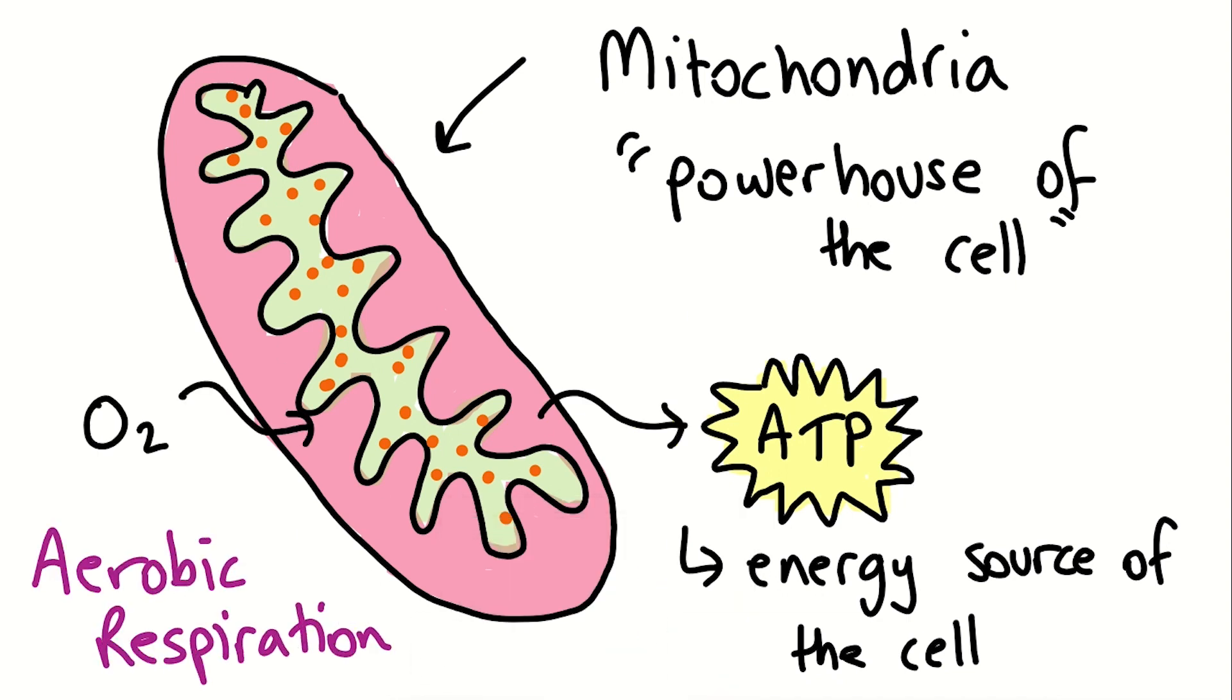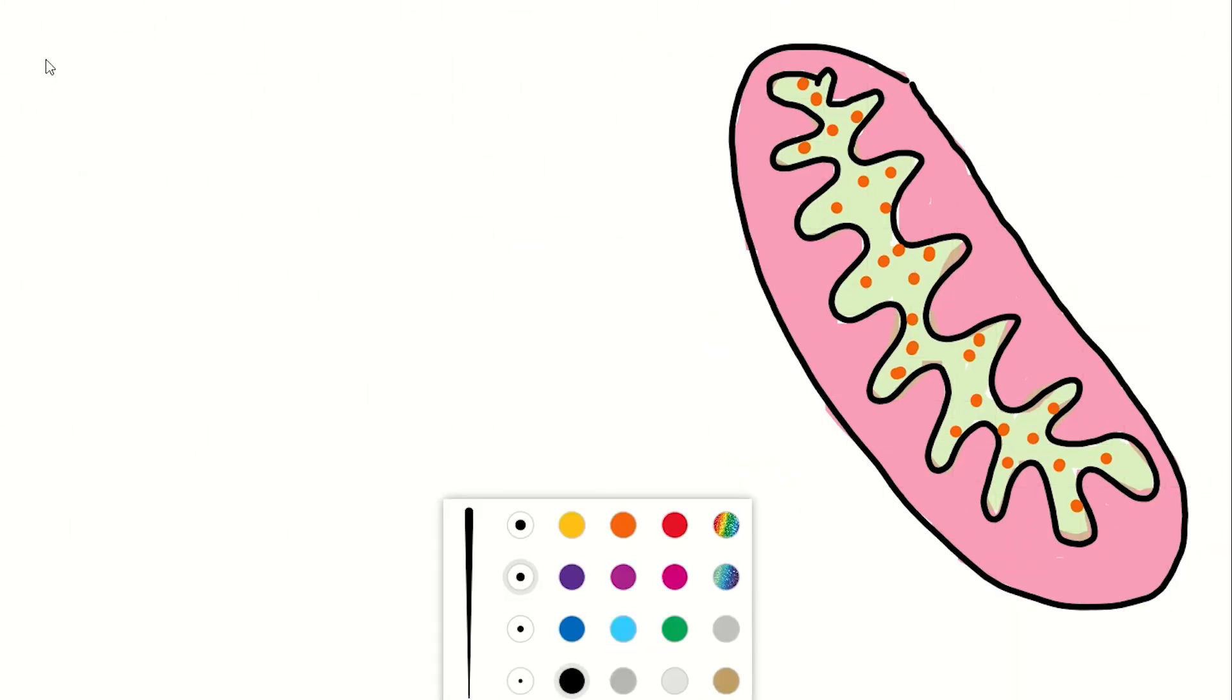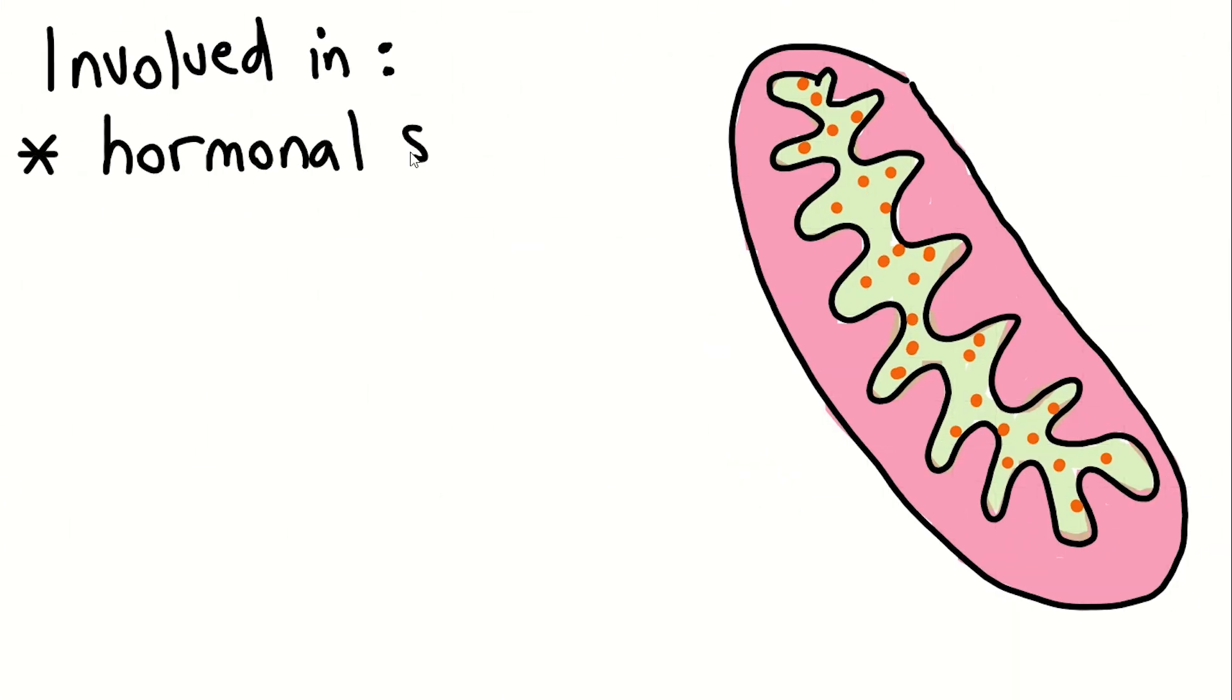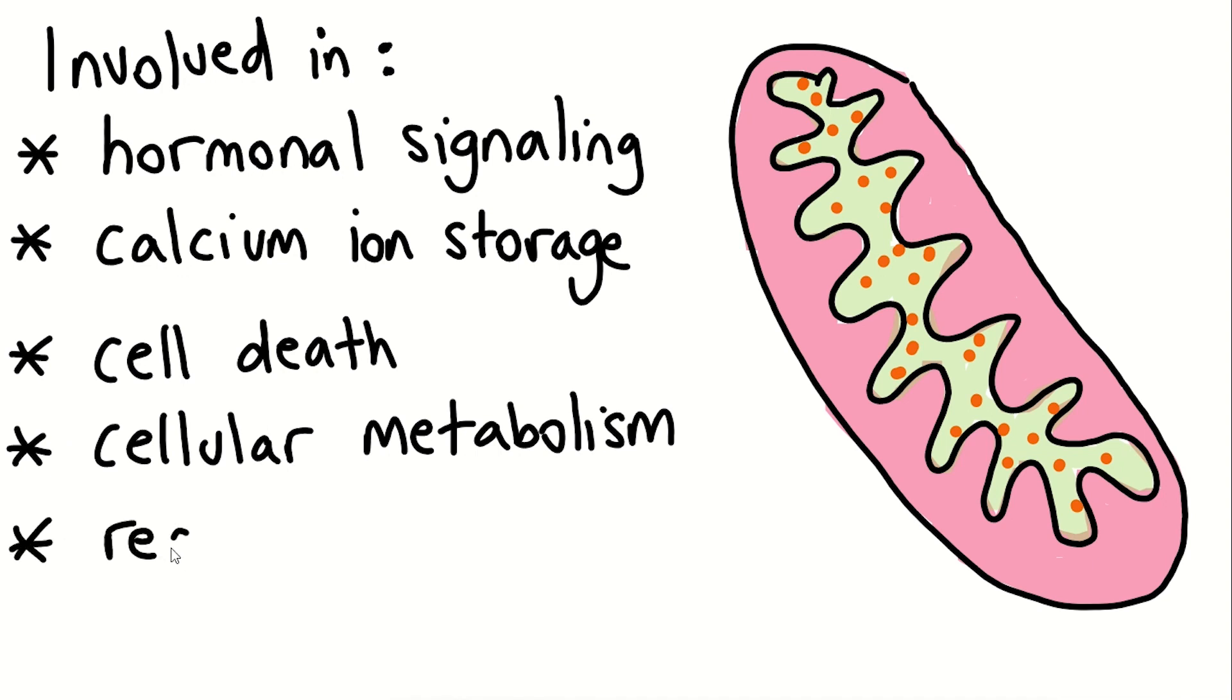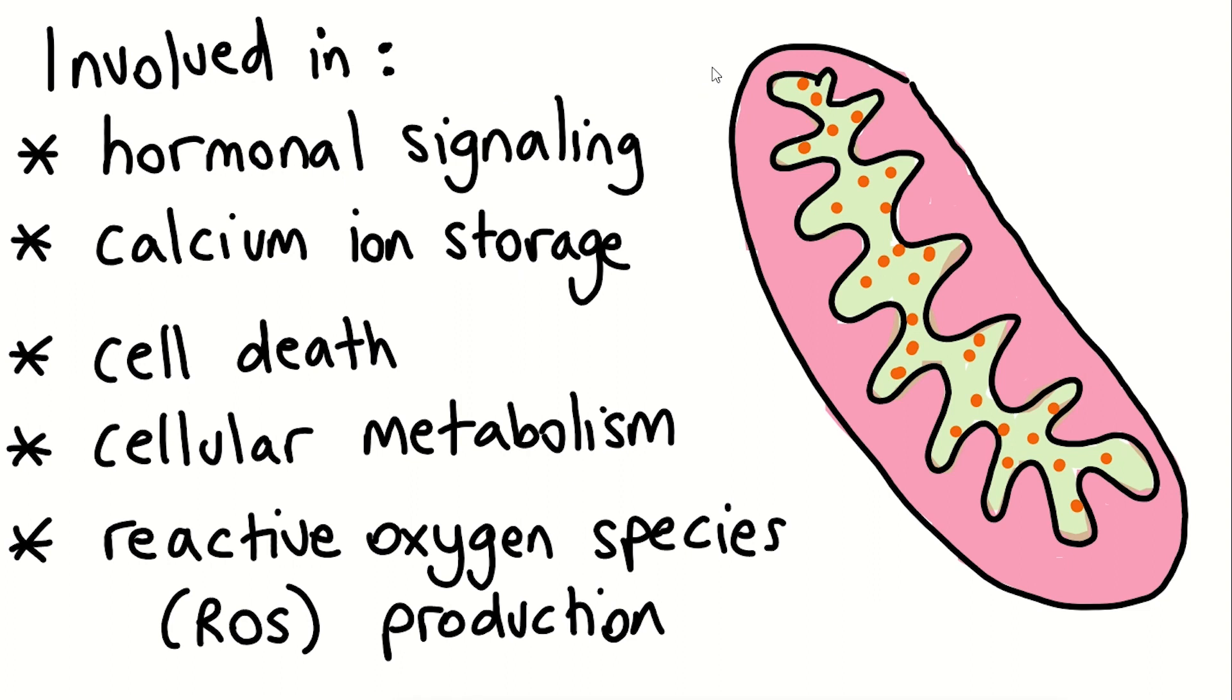However, mitochondria are more than just a powerhouse. They are involved in hormonal signaling, storage of calcium ions, the control of cell death, the regulation of cellular metabolism, and are also a source of reactive oxygen species, a subset of free radicals. Therefore, the mitochondria play a critical role in the health of a cell.